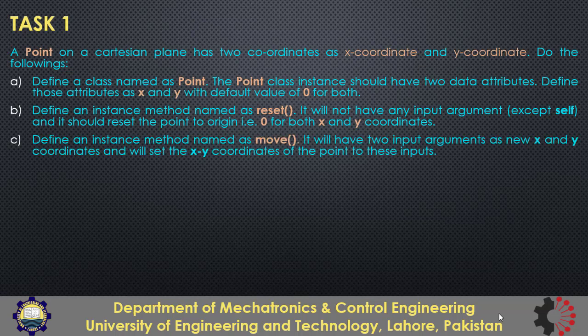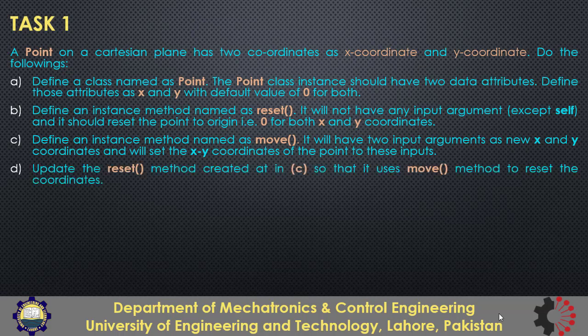Then define an instance method reset which will move the point to the origin by making both of its coordinates 0. Then define another method named move that will move the point to any location on the xy plane by passing in the location as an input argument. Then you will need to update the reset method so that it uses the move method to reset a point.